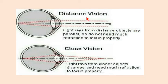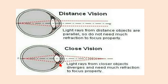These parallel rays do not need much refraction and they are focused on the retina. But for near objects, their light rays diverge, as you can see here. So the lens has to change its shape in order to refract and focus these light rays properly on the retina.